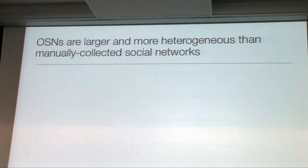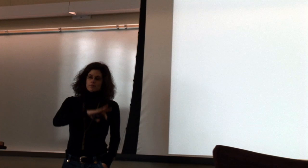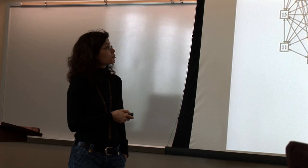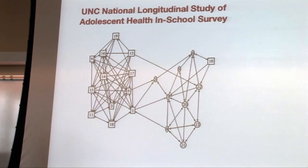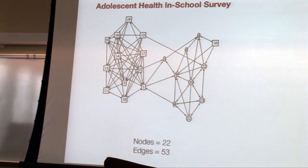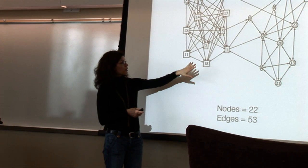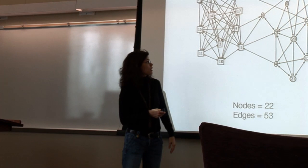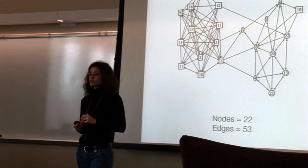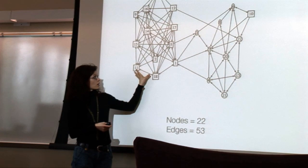OSN is short for Online Social Network. The first challenge is that the size of the data just eclipses the kind of data sets that social scientists have looked at in the past. Here's an example: the National Longitudinal Study of Adolescent Health, where they went into classrooms from grade school up to high school and asked people manually who their friends were, then constructed social networks from that. Here are kids in a seventh-grade classroom, where nodes are circles or squares according to gender.